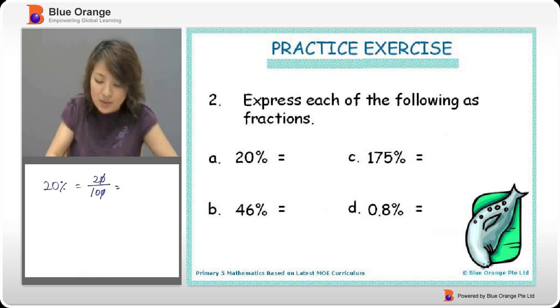And since it's fraction, we have to always make sure that it is reduced to the lowest term. So we cancel. We get 2 over 10. And then we divide by 2, divided by 2. We get 1 over 5.